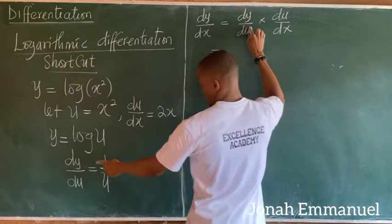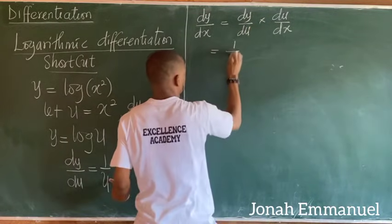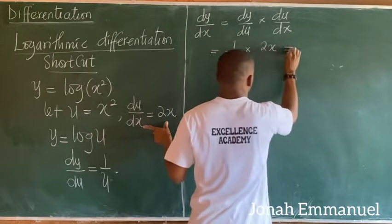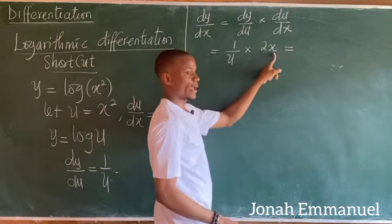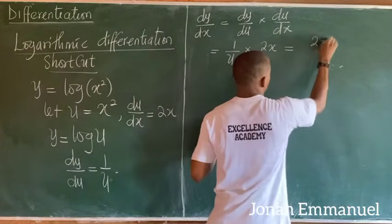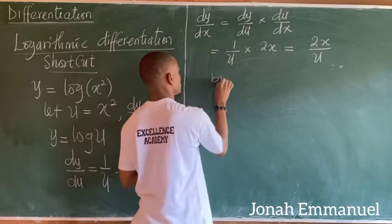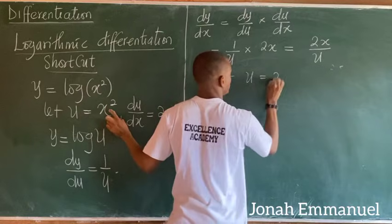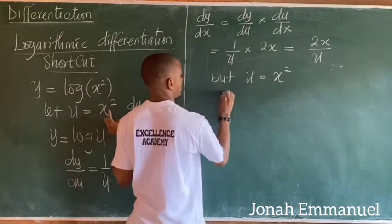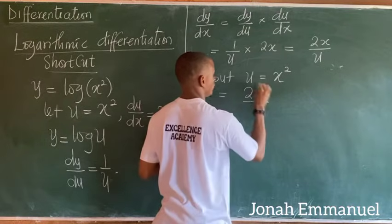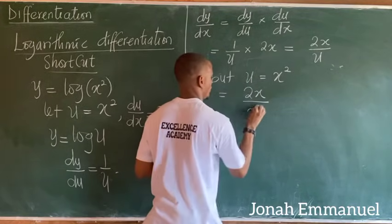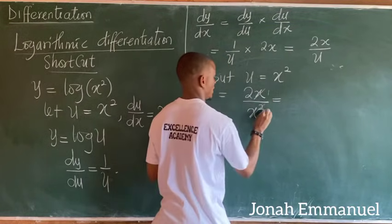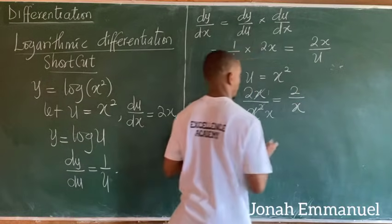So dy over du is 1 over u, and du over dx is 2x, giving 2x over u. Since u equals x squared, this becomes 2x over x squared, which simplifies to 2 over x.